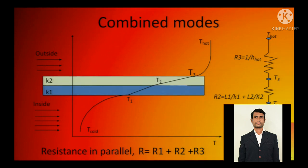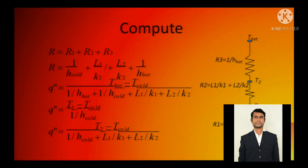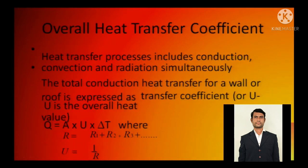The combined modes that I have already explained you: r3 equals 1 by h hot, then suppose if there are two surfaces like k1 and k2, so you will be having L1 by k1, 1 by h cold, 1 by h hot. So you just need to add everything, you will get the resistances. Compute them, you will get q. These are all the resistances. Overall heat transfer coefficient: you have the summation of r. So q equals 1 by summation of r - it is just the opposite of the resistance. So q will be u A delta T, the overall heat transfer coefficient.